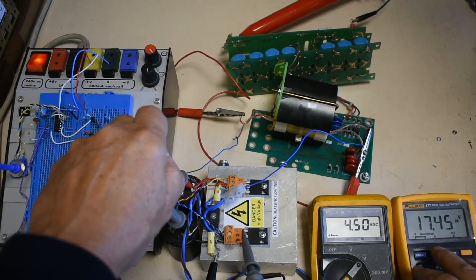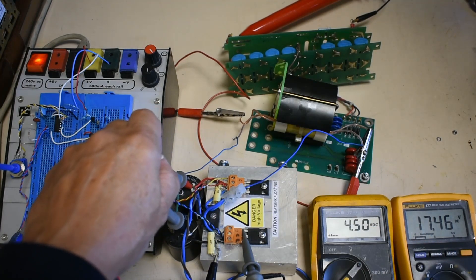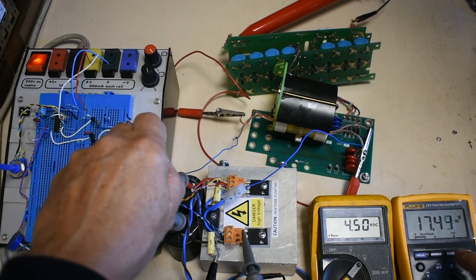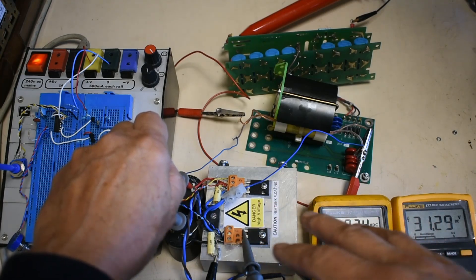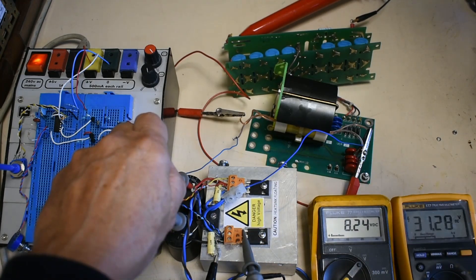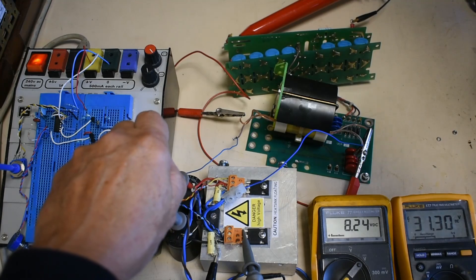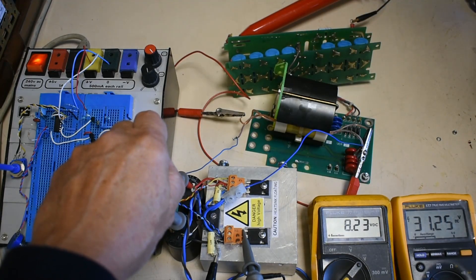The second meter here is reading the voltage on the DC bus. We've got 17 volts there just now. So I take that up to say 30 volts. So we've now got 30 volts on our DC bus and we've got 8.2 kV across our high voltage output.